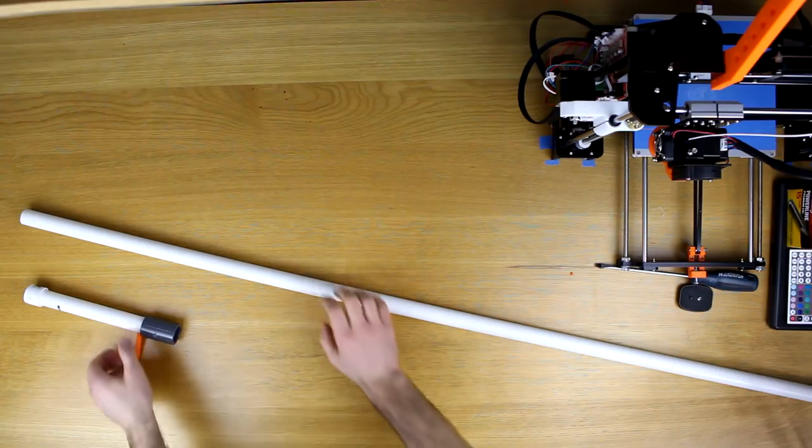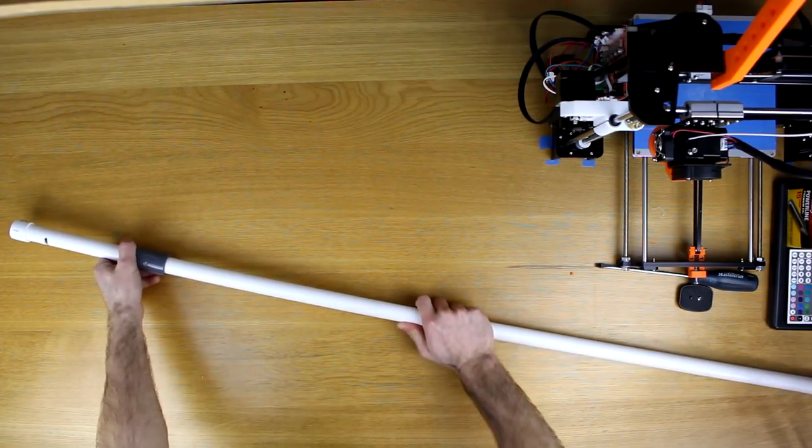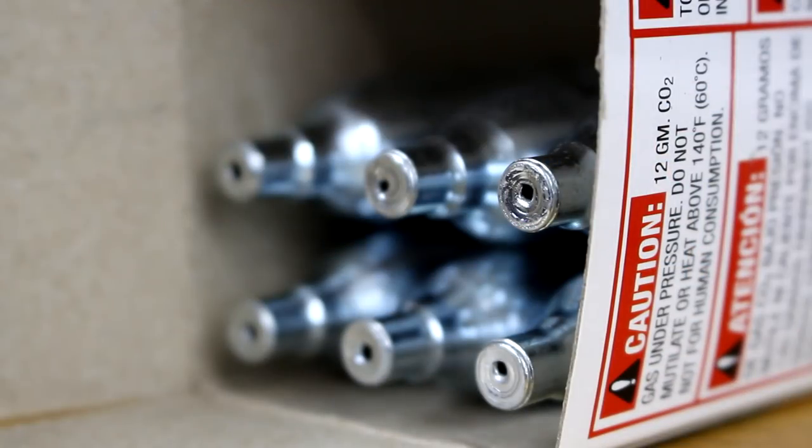Alright so this finished trigger mechanism just attaches onto a 5 foot length of PVC. I designed this trigger so that the nail will drive up and pierce a nice clean hole into the bottom of the CO2 cartridge.